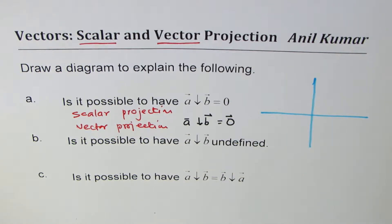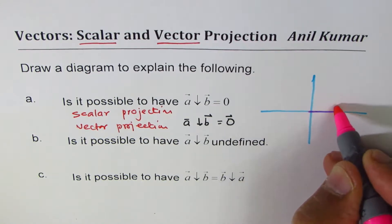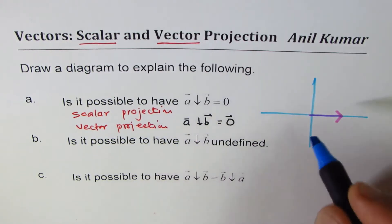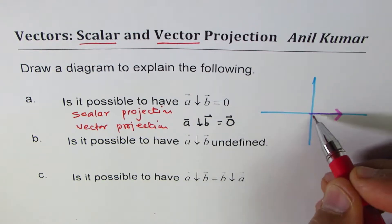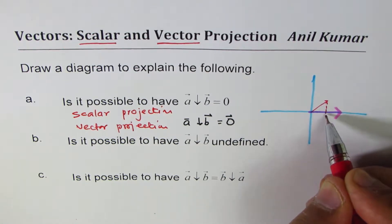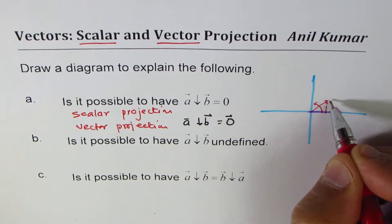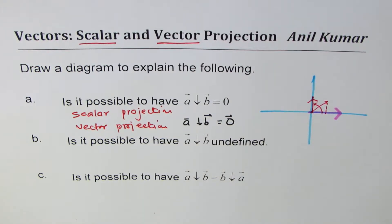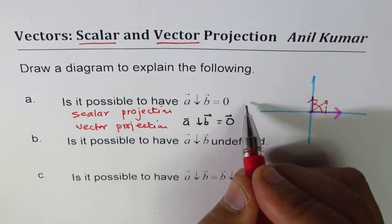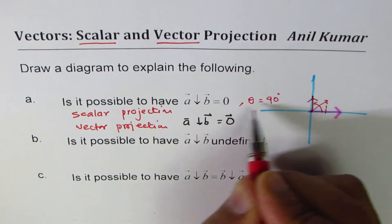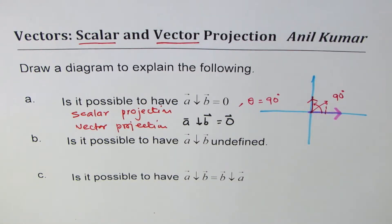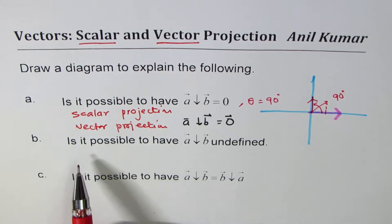Let's say vector b is along the x-axis. When can the projection of a be zero on b? If we have vector a at some angle, as we rotate it the projection of a decreases, and as soon as vector a comes along the y-axis, the projection has zero magnitude. So yes, this is possible when angle theta is 90 degrees, where theta is the angle between a and b. If theta is 90 degrees, then the projection equals zero.